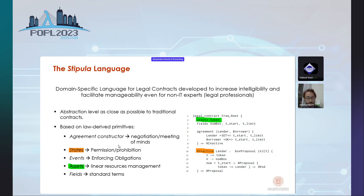To achieve this, Stipula's building blocks and main elements were directly derived from the main concepts and elements of contract law, such as the meeting of the minds, permissions, or obligations. For the purposes of this presentation, Stipula states — indicated with an @ symbol in front — are used to enforce the concept of situations of permission or prohibition, thus enacting or precluding certain actions from being taken. While assets are the linear resources managed by the contract, such as money or goods.